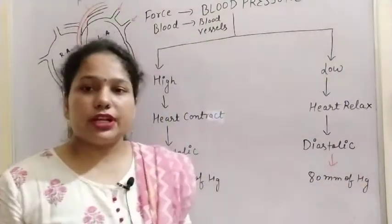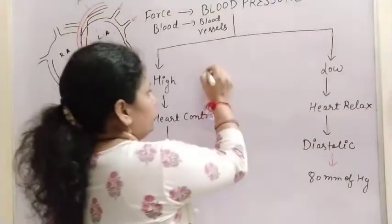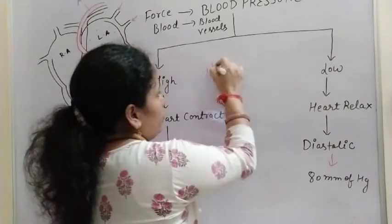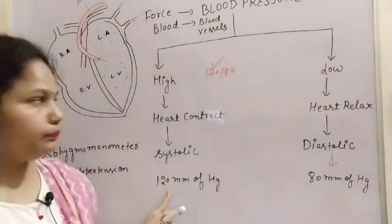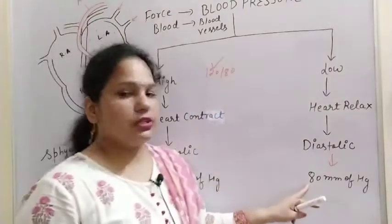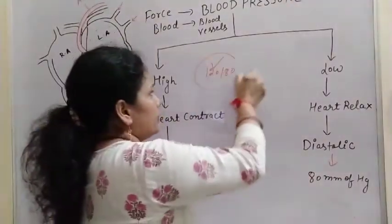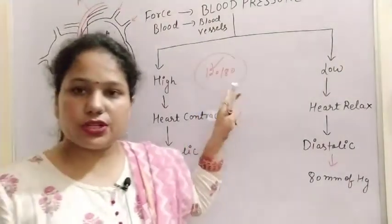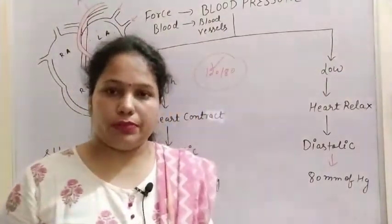Normally, when the doctor asks what is your blood pressure, you say 120 over 80. So that 120 is for the systolic pressure and 80 is for the diastolic pressure. So if this value is present, then we can say the blood pressure is normal in case of human beings.